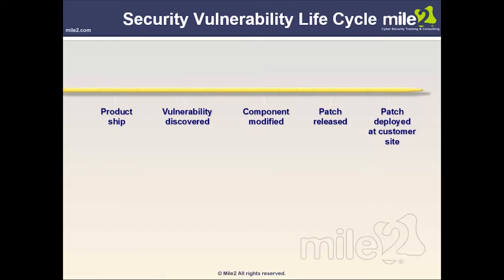The security vulnerability life cycle begins when a vendor ships a product. Users discover a flaw or vulnerability, the vendor is notified, modifications are made, a patch is created and released, and then the patch is deployed at the customer site. Microsoft and other vendors use automatic updates for this, though in the past patches were posted on a site and customers were emailed to download them.